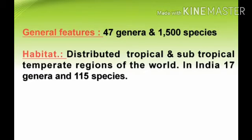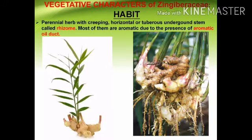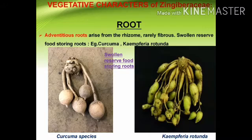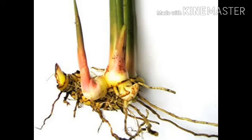Regarding general features and habitat — the vegetative characters: the habit consists of perennial herbs with creeping horizontal or tuberous underground stems called rhizomes. Most of them are aromatic due to the presence of aromatic ducts, which may be lysigenous ducts or schizogenous ducts. The root consists of adventitious roots arising from the rhizomes, rarely fibrous. Adventitious roots are roots arising from any part other than the root.